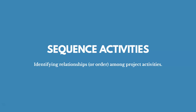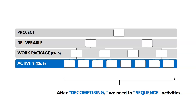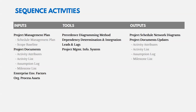Now let's move on to Sequence Activities — identifying relationships or order among project activities. We've already decomposed and defined our activities; now we just have to put them in the right order. Inputs include the project management plan (with the schedule management plan inside), and project documents — notably the activity attributes, activity list, and milestone list from the previous process, plus enterprise environmental factors and organizational process assets.